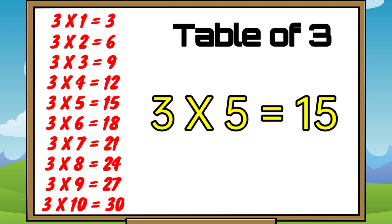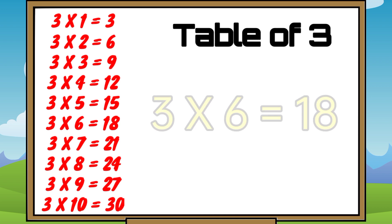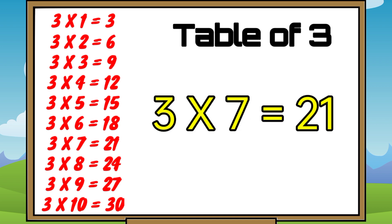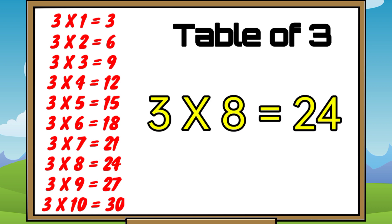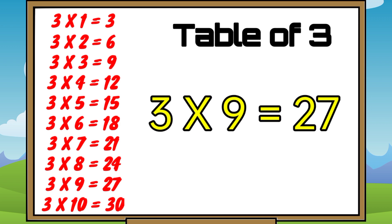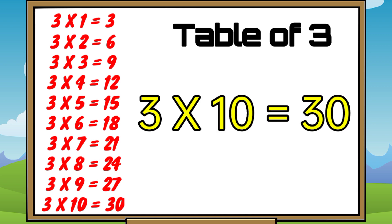3 fives are 15. 3 sixes are 18. 3 sevens are 21. 3 eights are 24. 3 nines are 27. 3 tens are 30.